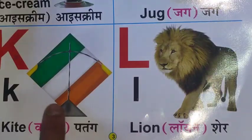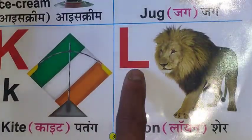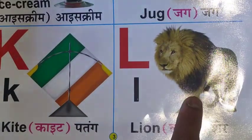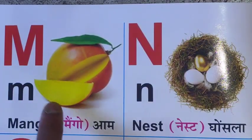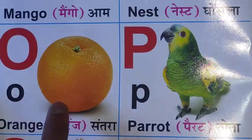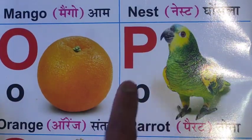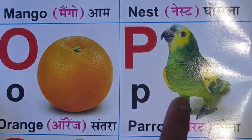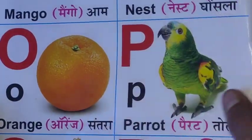K for Kite, L for Lion, M for Mango, N for Nest, O for Orange, P for Parrot.